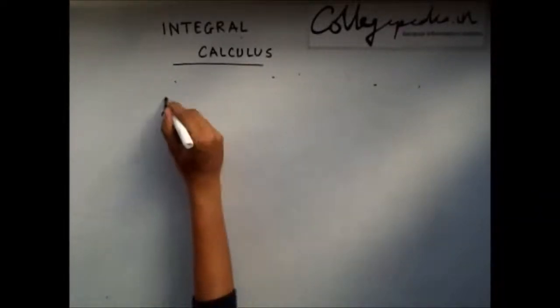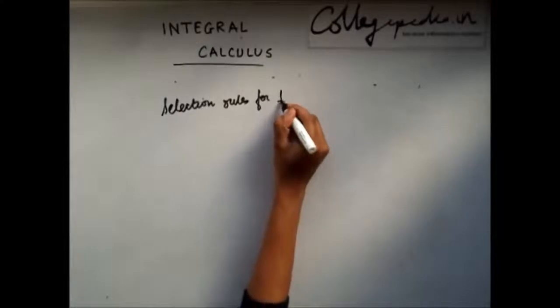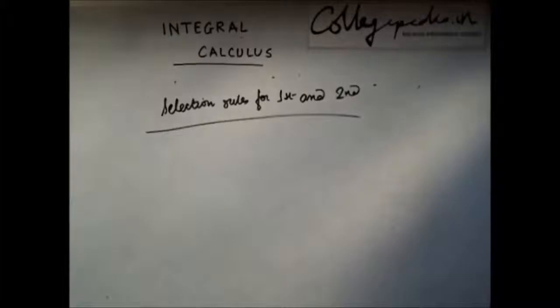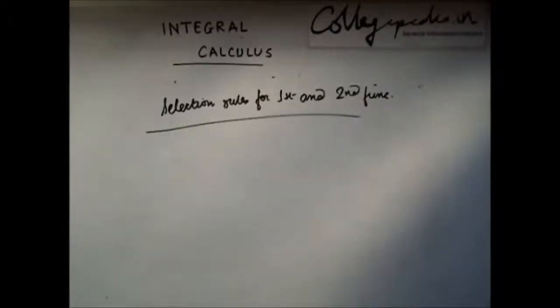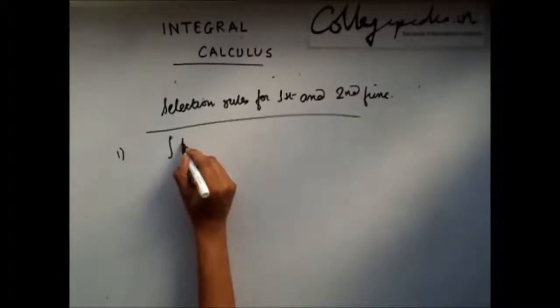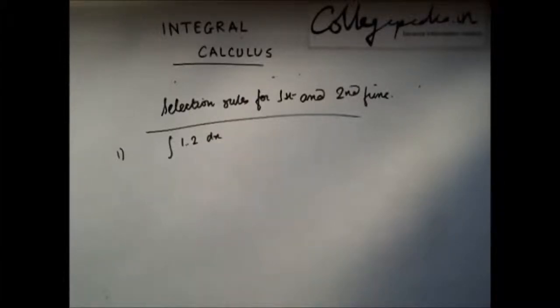Now, let us see what are the selection rules. Now, these rules are not very obvious, you need not always follow this, but there are some tricks which will make your integration simpler. The first rule which we follow is that if, let us say, you have two functions, first and second, this product we are trying to integrate.